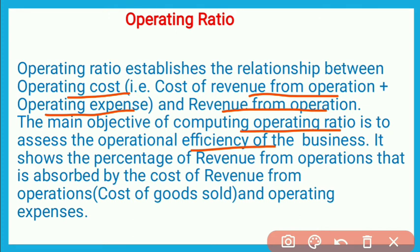The main objective of computing Operating Ratio is to assess the operational efficiency of the business — whether the business is operated more efficiently, less efficiently, or inefficiently. यह ratio revenue from operations की उस percentage को show करता है जितना कि operating cost absorb किया गया total revenue from operations का।